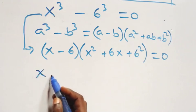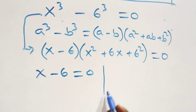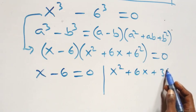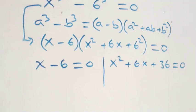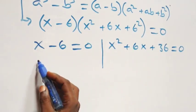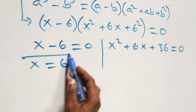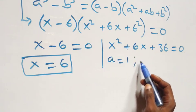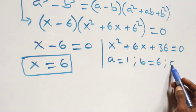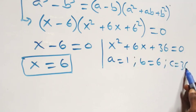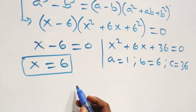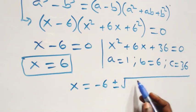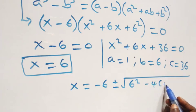Again we have two sub-cases: x - 6 = 0, or x^2 + 6x + 36 = 0. The first gives x = 6, a real solution. For the quadratic, a = 1, b = 6, and c = 36. Applying the quadratic formula: x = (-6 ± √(36 - 4 × 1 × 36)) / 2.